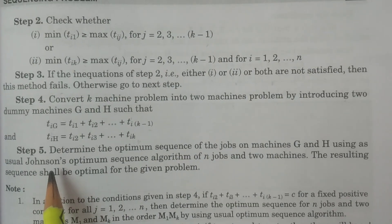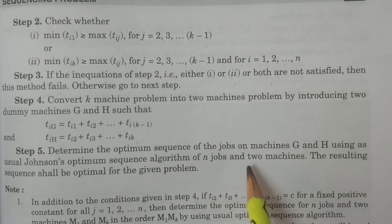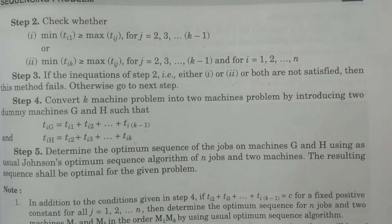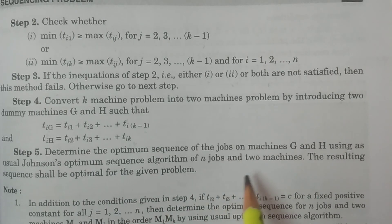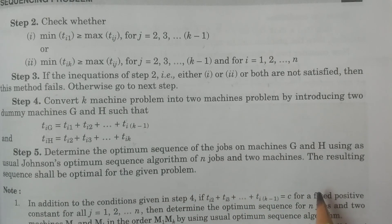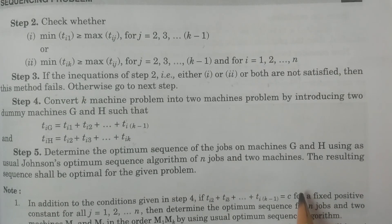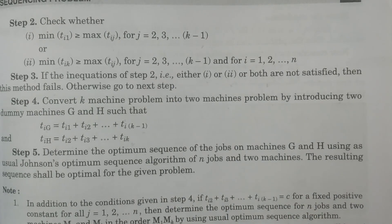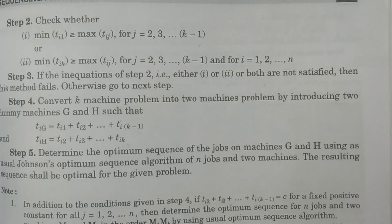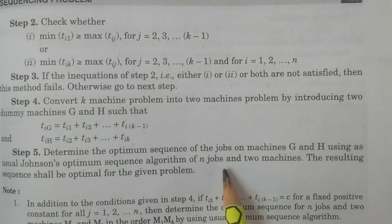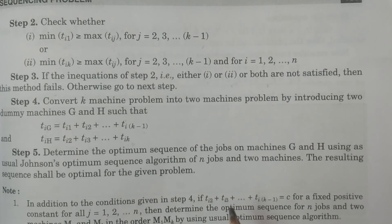In step five, you determine the optimum sequence of n jobs for the two dummy missions G and H using Johnson's algorithm as usual. Whatever optimum sequence is obtained, you then take that sequence and calculate the time in and time out for all original missions, mission 1 through mission k. The main objective is to calculate the total elapsed time using this optimum sequence.